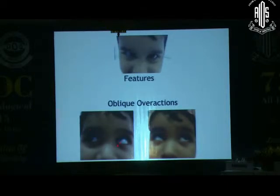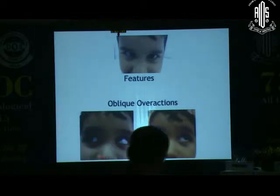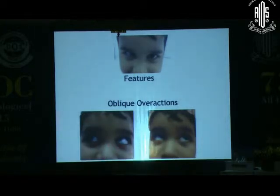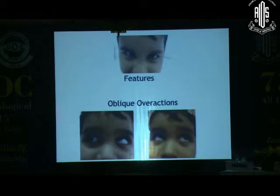The eye goes up further when looking in the tertiary gaze — in this case the dextro-elevative gaze, and in this case the levo-elevation gaze. So oblique overactions are known associations. There could also be an associated nystagmus and an associated DVD. From a third to about three-fourths of patients will have nystagmus, DVD, and oblique overactions respectively.